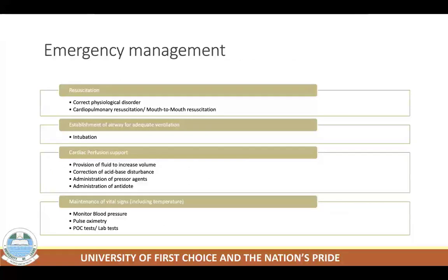In emergency management, overdose patients are often unstable when discovered. Resuscitation with establishment of the airway, adequate support of ventilation and perfusion, and maintenance of all vital signs must be accomplished first. Continuous cardiac and pulse oximetry monitoring is essential.